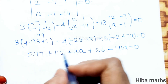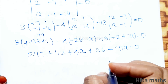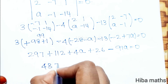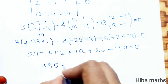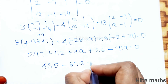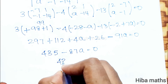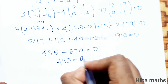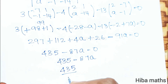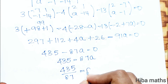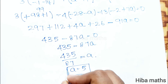Adding up: 297 plus 112 plus 26 equals 435. The terms with a give minus 91a plus 4a equals minus 87a. So 435 minus 87a equals 0, which means 435 equals 87a, and dividing 435 by 87 gives a equals 5.